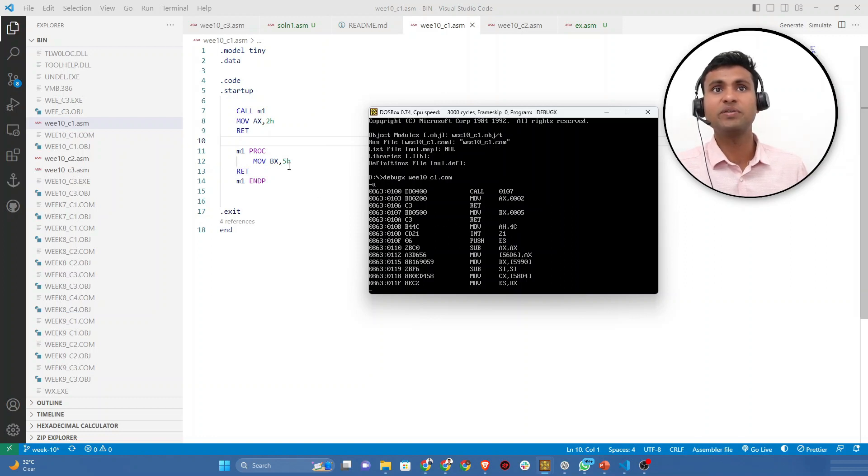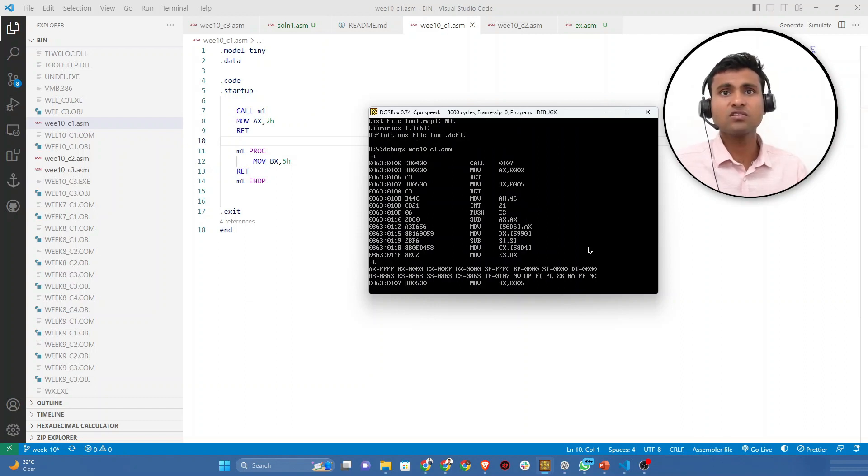Here it is just making a call to 107, which is the statement you can see here, the move BX instruction. After that, the return instruction is there which will send it back. Let's execute this and see.